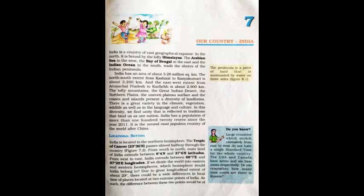A peninsula is a piece of land that is surrounded by water on three sides. The north-south extent from Kashmir to Kanyakumari is about 3,200 kilometers, and the east-west extent from Arunachal Pradesh to Kach is about 2,900 kilometers. The lofty mountains, the Great Indian Desert, the Northern Plains, the uneven plateau surface, and the coast and islands present a diversity of landforms.